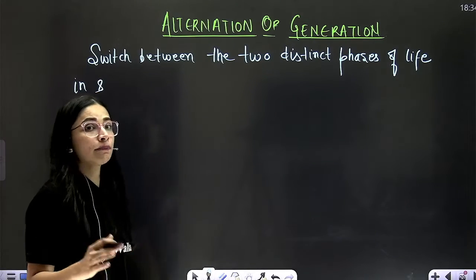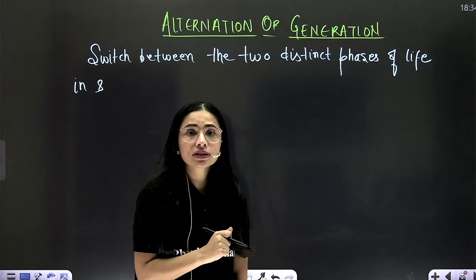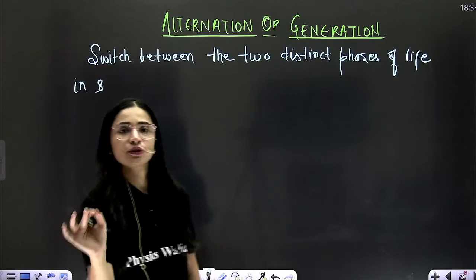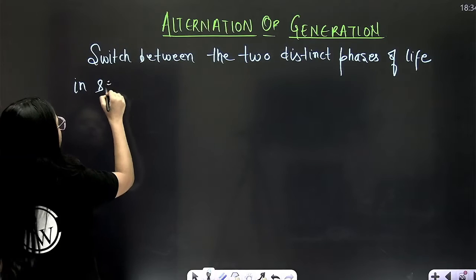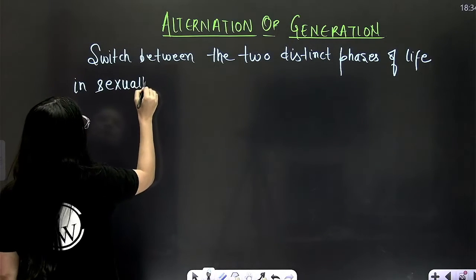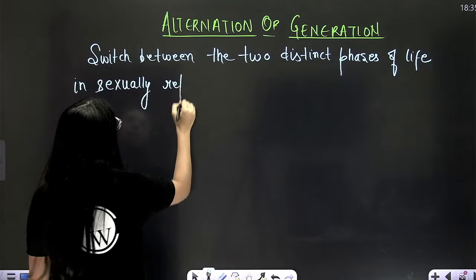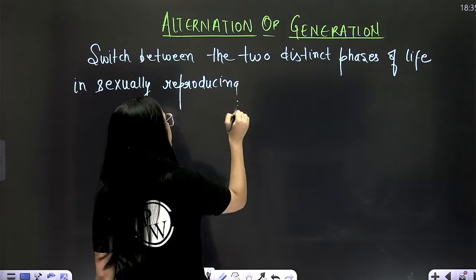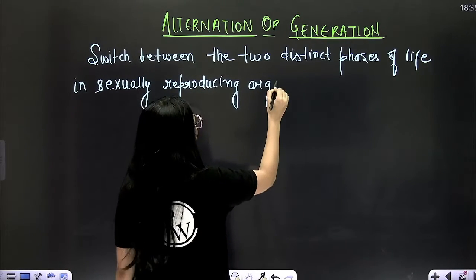Now you know bacteria, prokaryotes, they do not reproduce sexually. So in them there is no alternation of generation. In sexually reproducing organisms.